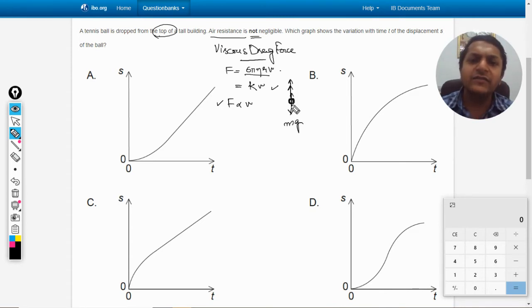After some time the drag force will start building itself because as the velocity keeps on increasing, the drag force will keep on increasing. So when mg becomes equal to the drag force, I can say that F net will become zero. So no longer the body will be getting accelerated.